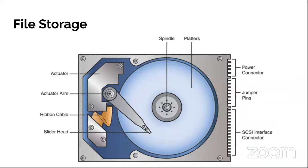A cylinder is the same track on each platter, spanning all platters on a drive. This geometry refers to the structure of a hard disk in terms of platters, tracks, and sectors. Storage capacity is calculated as: the number of cylinders times the number of heads times the number of sectors times the number of bytes per sector.